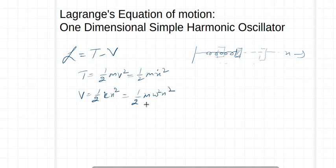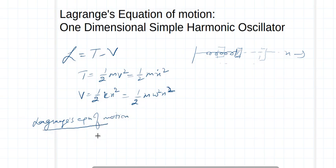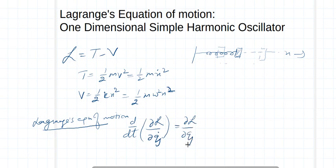Now I will use the Lagrangian equation of motion, which is d/dt(∂L/∂q̇ⱼ) = ∂L/∂qⱼ. Since this is one-dimensional motion, qⱼ is basically x. I will use this formulation to derive the equation of motion.